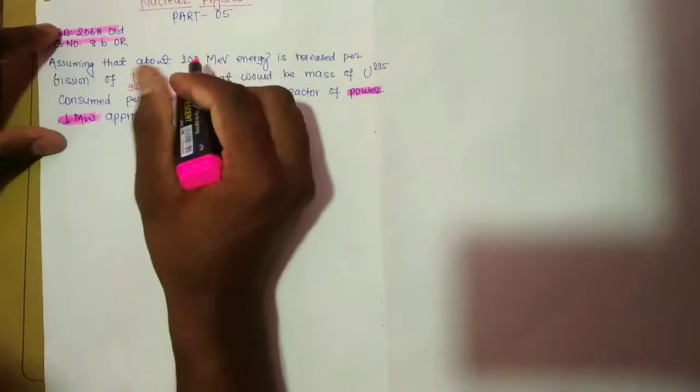Therefore, 86,400 into 10 to the power 6 joule energy will be released by 86,400 into 10 power 6 by 200 into 1.6 into 10 to power minus 13, which equals 2.7 into 10 to the power 21 atoms.